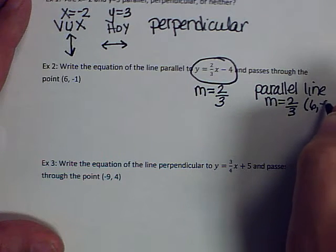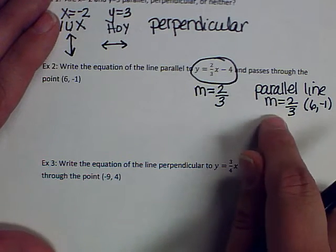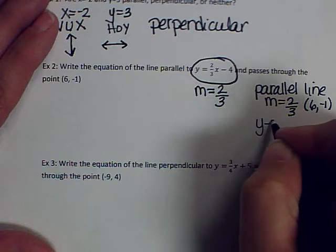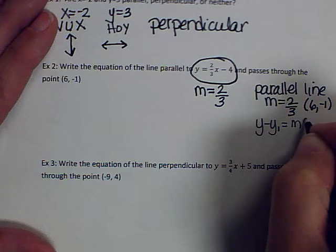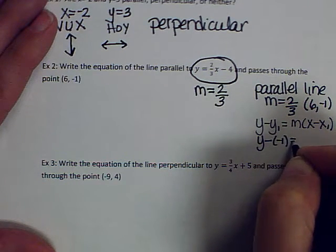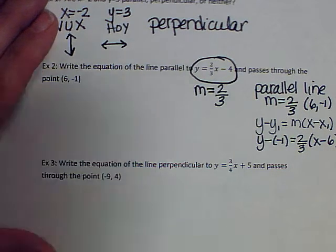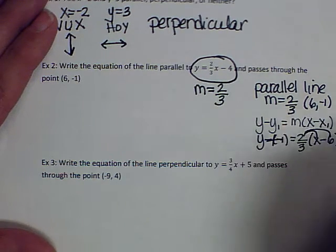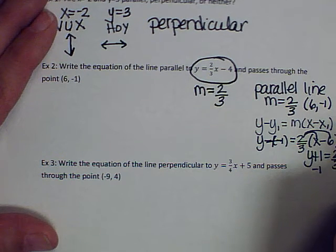I have a point and a slope, so I use point-slope form: y minus y1 equals m times (x minus x1). Plugging in: y minus negative 1 equals 2/3 times (x minus 6). Minus negative 1 is plus 1, and distributing 2/3 gives y plus 1 equals 2/3 x minus 4. Subtract 1: y equals 2/3 x minus 5.